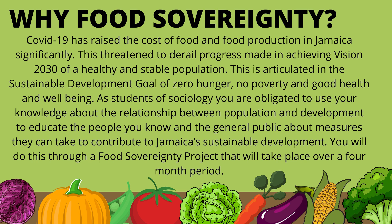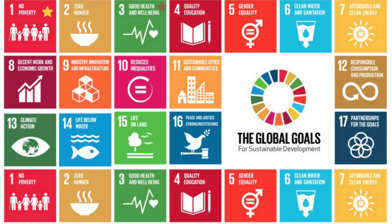As students of sociology, you are obligated to use your knowledge about the relationship between population and development to educate the public about measures they can take to contribute to Jamaica's sustainable development. You will do this through the food sovereignty project, which will take place over four to five months. You have lots of time and may start right now.